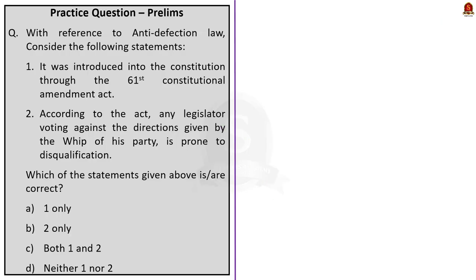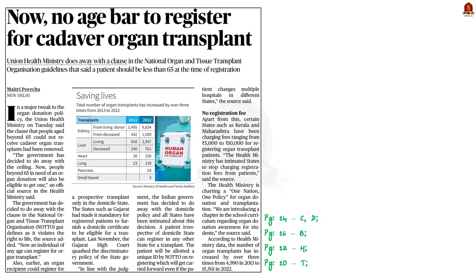With this, we came to the end of this news article discussion on anti-defection law. Let us move on to the next news article discussion. This news article talks about recent changes introduced in the cadaver organ donation policy by the Union Health Ministry. From now on, people above the age of 65 years who are in need of organ transplantation will be allowed to get it done.